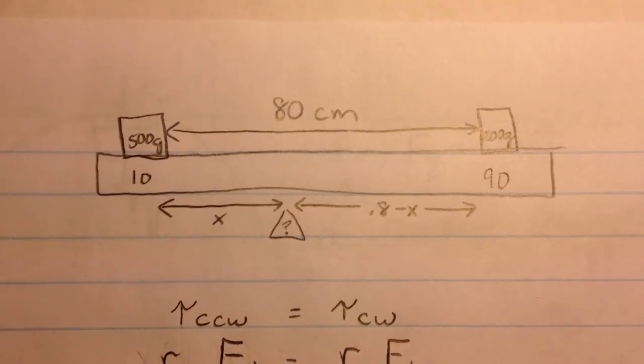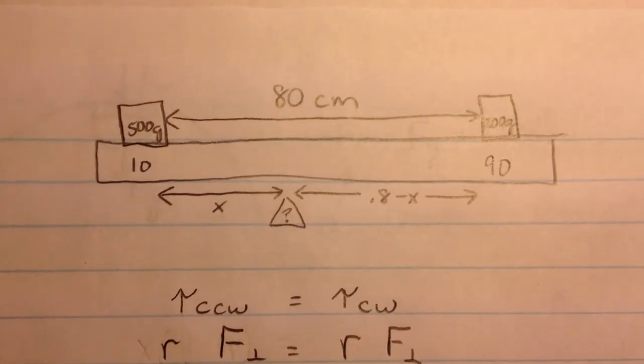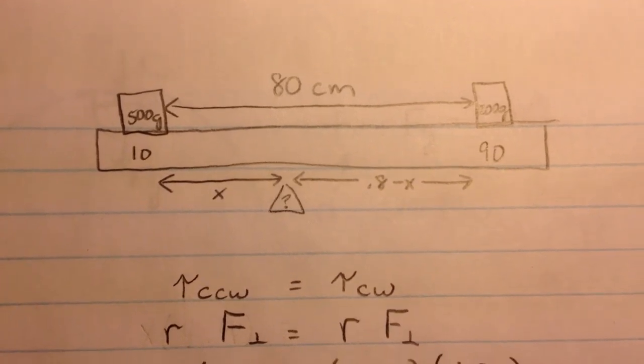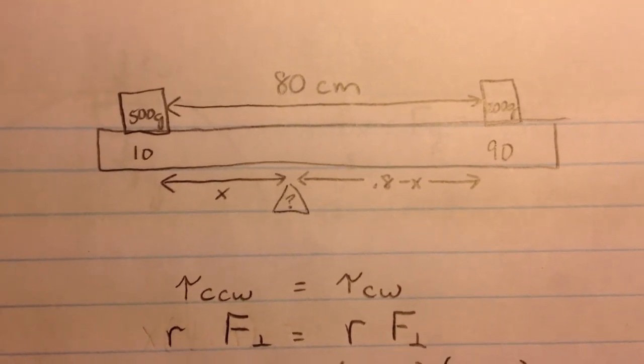In this problem we're trying to figure out where to put a balancing point between two objects that are already in predefined locations on a meter stick.